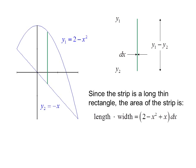Since the strip is a long thin rectangle, the area of the strip is length times width equals 2 minus x squared plus x dx. We consider the strip a rectangle because it is so thin, the slight bevel on the ends is really not important.